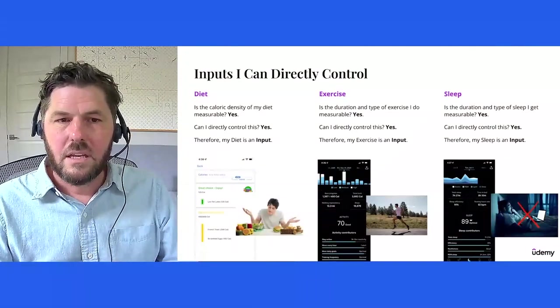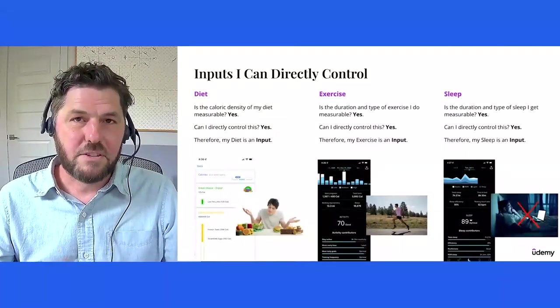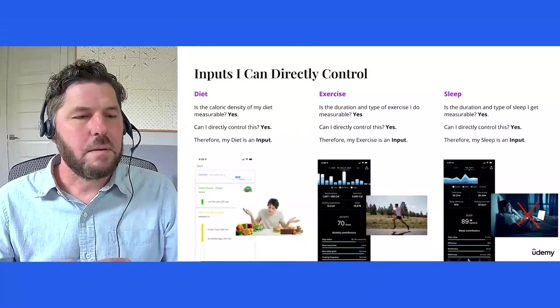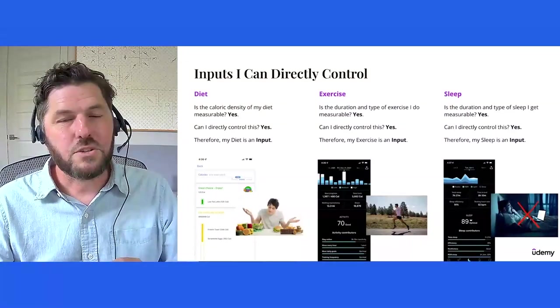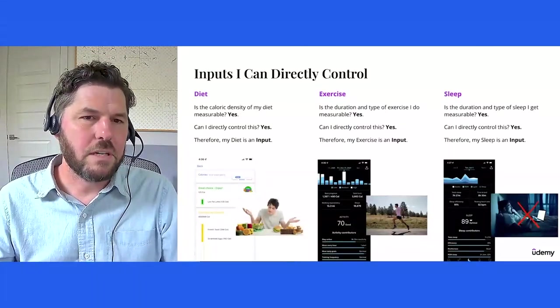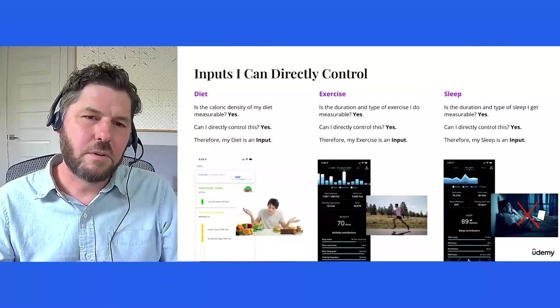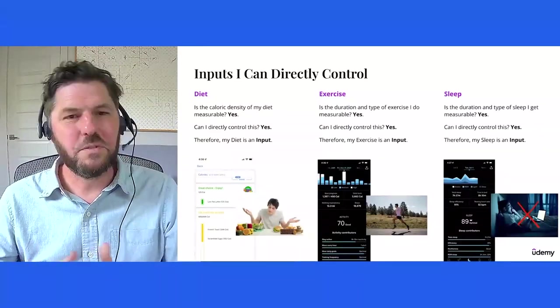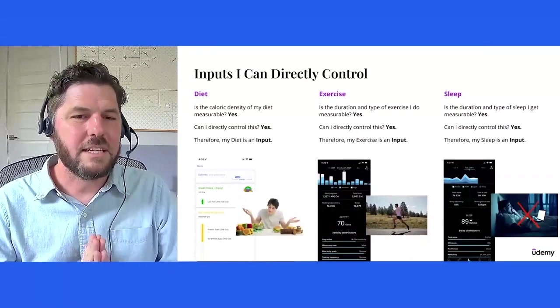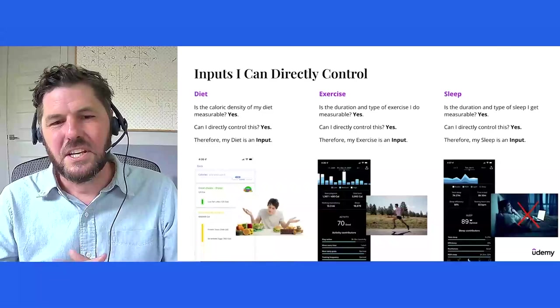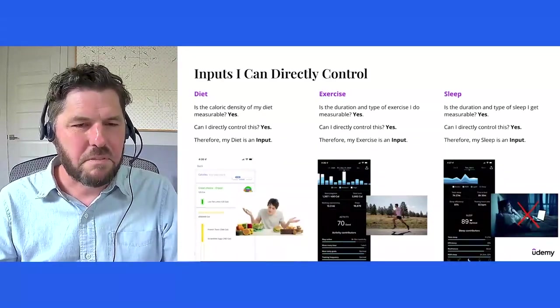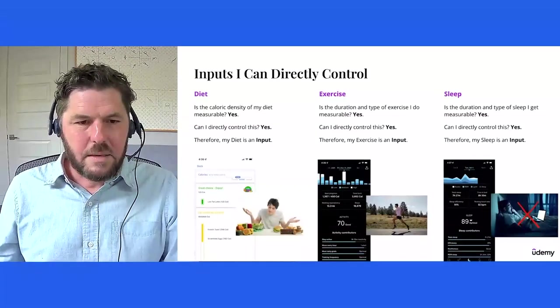And sleep. How about the duration and type of sleep that I get? Is this measurable? Yes. Can I directly control it? Yes. Sleep is interesting because a lot of things that we might control in our lives are things that we can do more of, or we can change how we do them. Sleep is interesting because we don't actually directly control sleep while we're tuned out and sleeping. But we can still directly control the quality of our sleep, for instance, by not doing things. So I cannot read my laptop in bed late at night, right before I go to sleep. And so here as well, my sleep is an input.